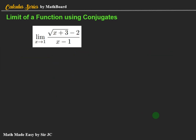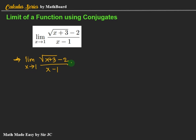Last one: the limit of (√(x + 3) − 2) / (x − 1) as x approaches 1. We simply multiply by the conjugate of the numerator, which is (√(x + 3) + 2) over (√(x + 3) + 2).